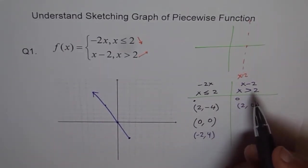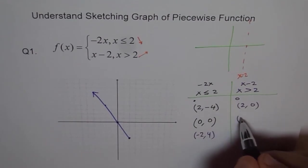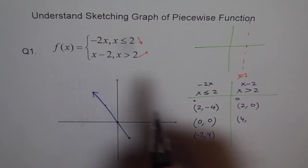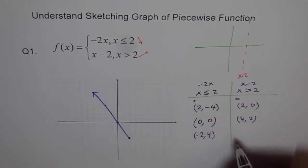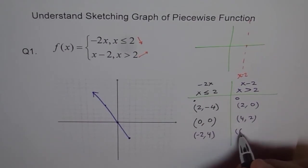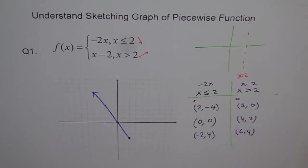Then we can take more points. For example, more than 2 will be 4. Let us say 4. 4 minus 2 is 2. Let us take one more point: 6. 6 minus 2 is 4. So we get 3 points here.